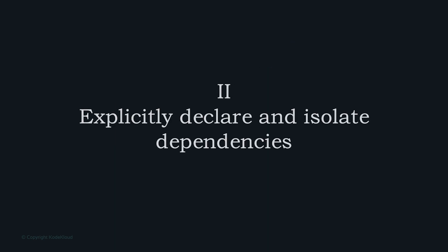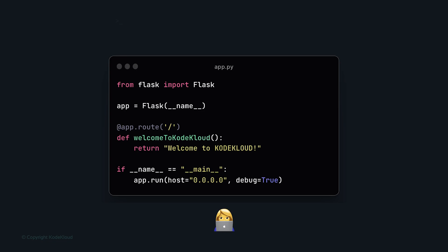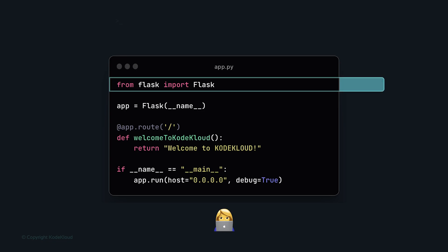The second rule in the 12-factor app is to explicitly declare and isolate dependencies. We installed the Flask framework — a Python web application framework — prior to writing our code. It is essential to install Flask in the local development environment before beginning development.